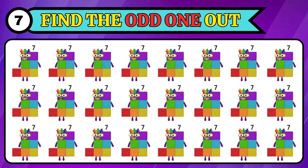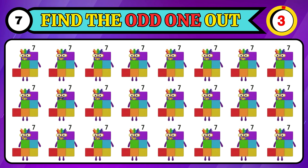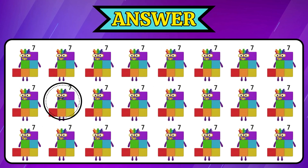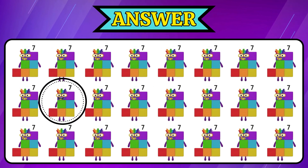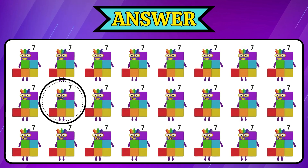Can you figure out the odd seven? You got it right! The odd seven is in the second row, second column.